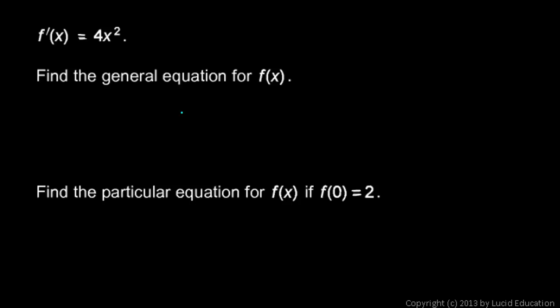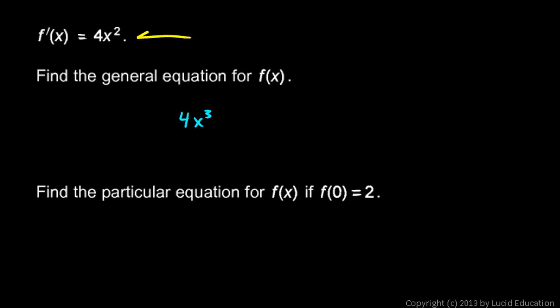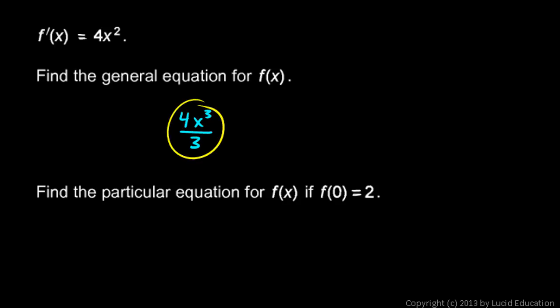We might think this is going to be 4x cubed. But if we take the derivative of that, we get 12x squared — we need it to be 4x squared. So we need to divide by 3. If we take the derivative of 4x cubed over 3, we get 4 thirds times 3x squared, which gives us 4x squared.